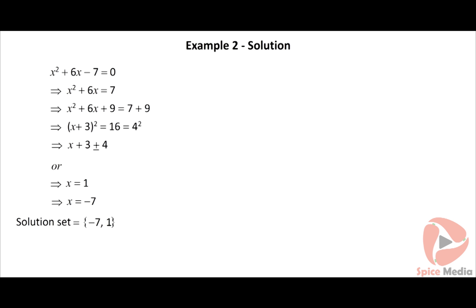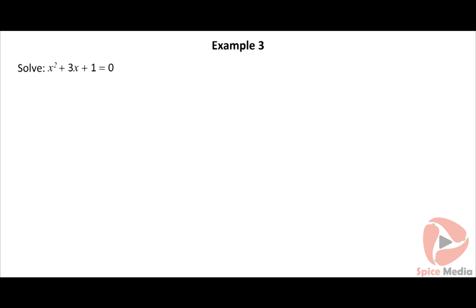Here is an example to solve by the completing square method. Solve the quadratic equation x² + 6x − 7 = 0. Click on the solution button to view the solution.